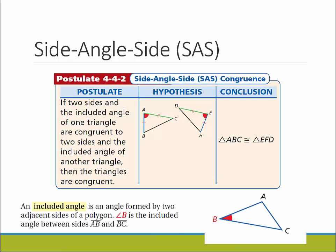Now we got one more to learn today, the side-angle-side, SAS. This postulate says that if two sides and the included angle of one triangle are congruent to two sides and the included angle of another triangle, then the triangles have to be congruent. An included angle is the angle formed by two adjacent sides.